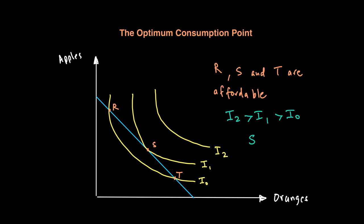A consumer would like to consume along the highest possible indifference curve that is affordable to him. So point S becomes what we call our optimum point. It is important to note that point S is also the point where the budget line is touching or is tangent to the highest possible indifference curve. At any other point along the budget line — like R and T — the consumer gets a lower level of utility. The point where the budget line is tangent to the indifference curve is where you get the maximum possible utility from your given budget.